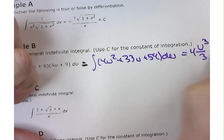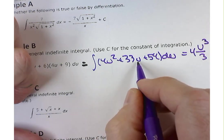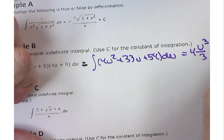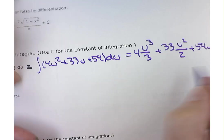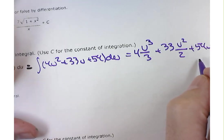u cubed over 3 plus 33 times what? u squared over 2. Good. And one more. And then 54u. And I lied. I said one more. One more. Plus c. Well done. Excellent.